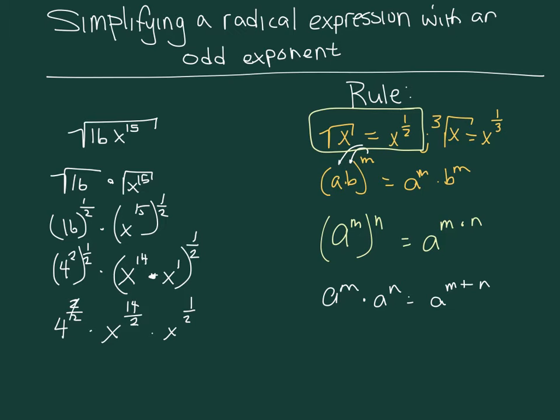Well, 2 over 2 is simply 1. So what I'm going to get now is 4x to the 7th times x to the 1 half. Well, what that is is 4x to the 7th square root of x, and then that would be your final answer.